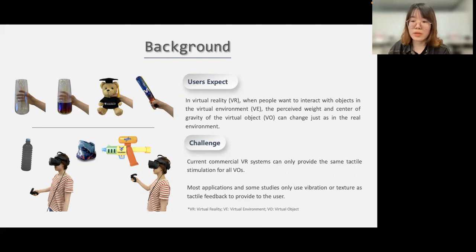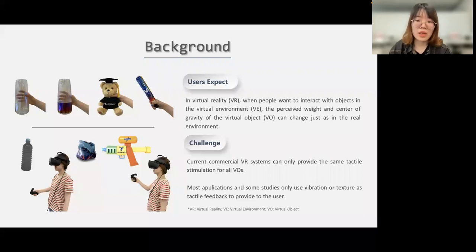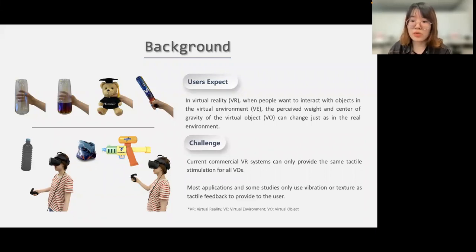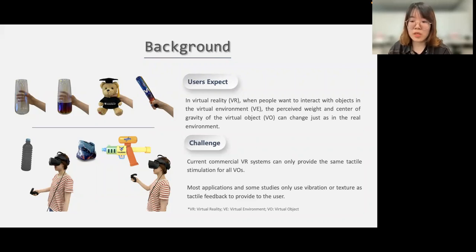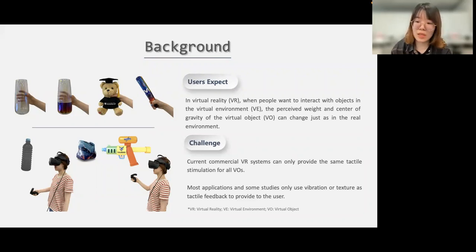On one hand, current commercial VR systems can only provide the same haptic simulation for all virtual objects, such as simple vibration feedback. On the other hand, most applications and several studies use only vibration or texture as the haptic feedback provided to users. Nevertheless, vibration alone cannot reflect all the properties of haptic sensations people feel when holding an object, because it cannot completely map other types of information like weight and inertia.